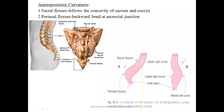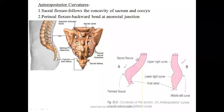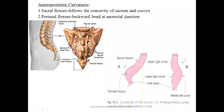The rectum at this point continues as the anal canal. Rectum continuing as anal canal here. The sacral flexure can be seen here — it follows the concavity of the sacrum and the coccyx. The next flexure is called the perineal flexure, where the flexion is a backward bend at the anorectal junction — this is the area where the rectum bends backwards to continue as the anal canal.